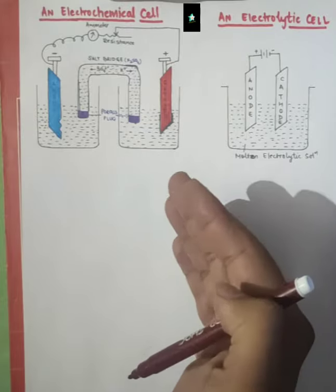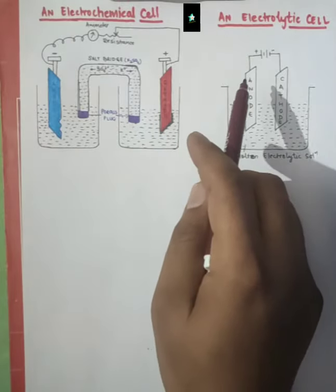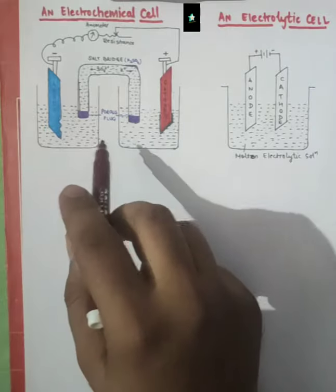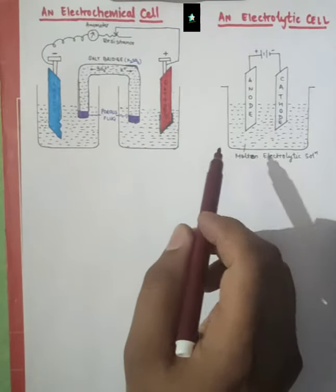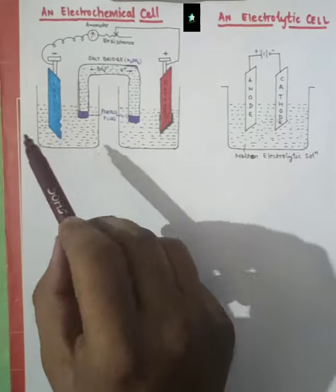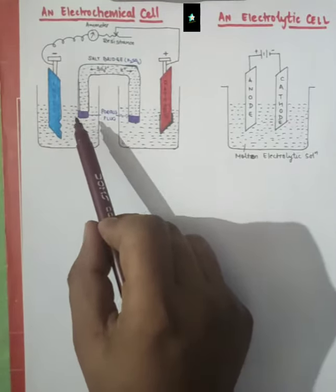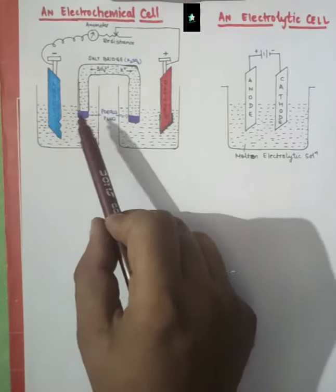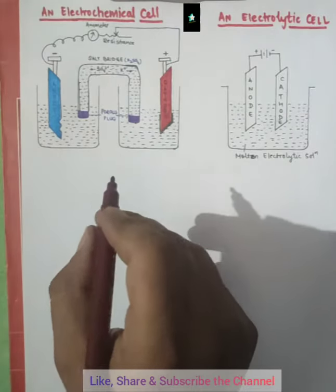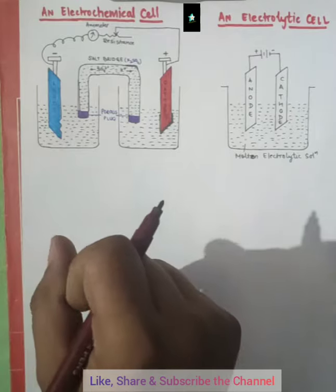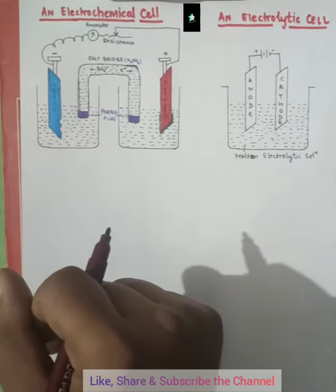This video is purely about the difference between the electrochemical cell and the electrolytic cell. This is the diagram — general diagrams. Please make sure that these are not the actual colors of the electrodes; these are symbolic colors to show the anode and cathode difference.